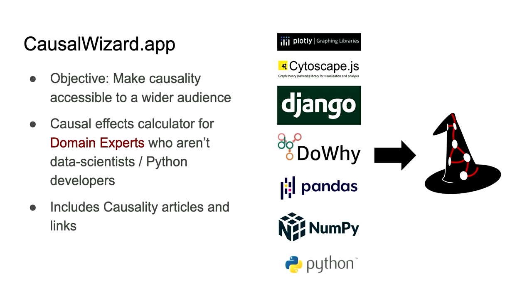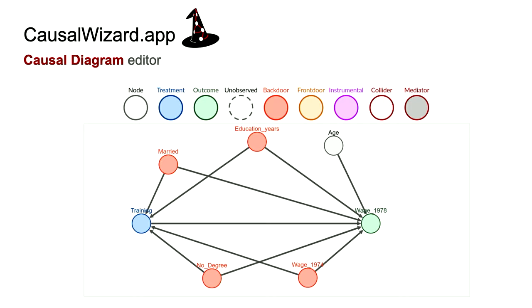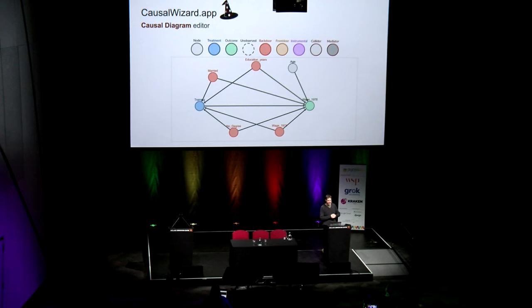Before I wrap up, I just want to quickly mention an app that I created based on the DoWhy library. This app aims to make some of the topics we talked about today, like causality, accessible to a wider audience — specifically trying to make these techniques available to scientists, engineers, and other people who aren't necessarily data scientists or Python developers, so they're not able to access libraries like DoWhy directly. The app includes a causal diagram editor that enables you to explore how different models of your system would be represented and how you can use them in your studies.